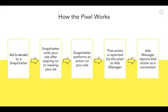Now let's review how attribution works with SnapPixel. The pixel works by reporting a Snapchat user's actions on your website. Actions are reported as an event — for example, when a user visits a page, adds an item to their shopping cart, or is making a purchase. The event is reported by the pixel to Ads Manager and reported as a conversion metric. For example, a user is shown your ad in Snapchat and then visits your website on a different device. The pixel will report that user's actions and help to measure the true effectiveness of your ads on Snapchat.